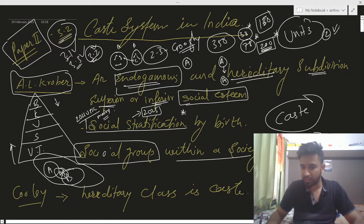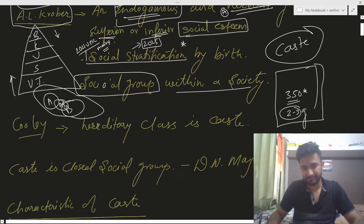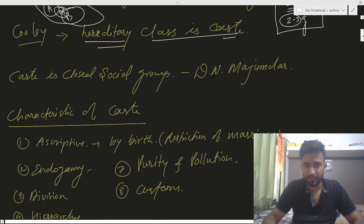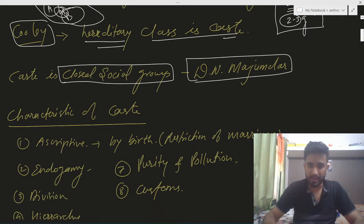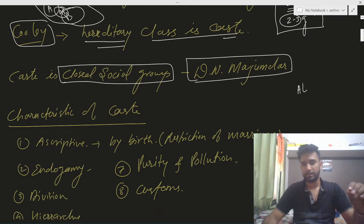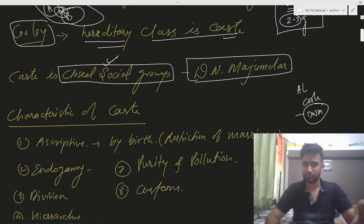Cooley has said that caste system is basically a hereditary class — he called hereditary class as caste. DN Mazumdar says caste is a closed social group. You have to write down the scholars and their definitions. There is an infinite amount of material on caste, but we need enough content to tackle any question asked on it.